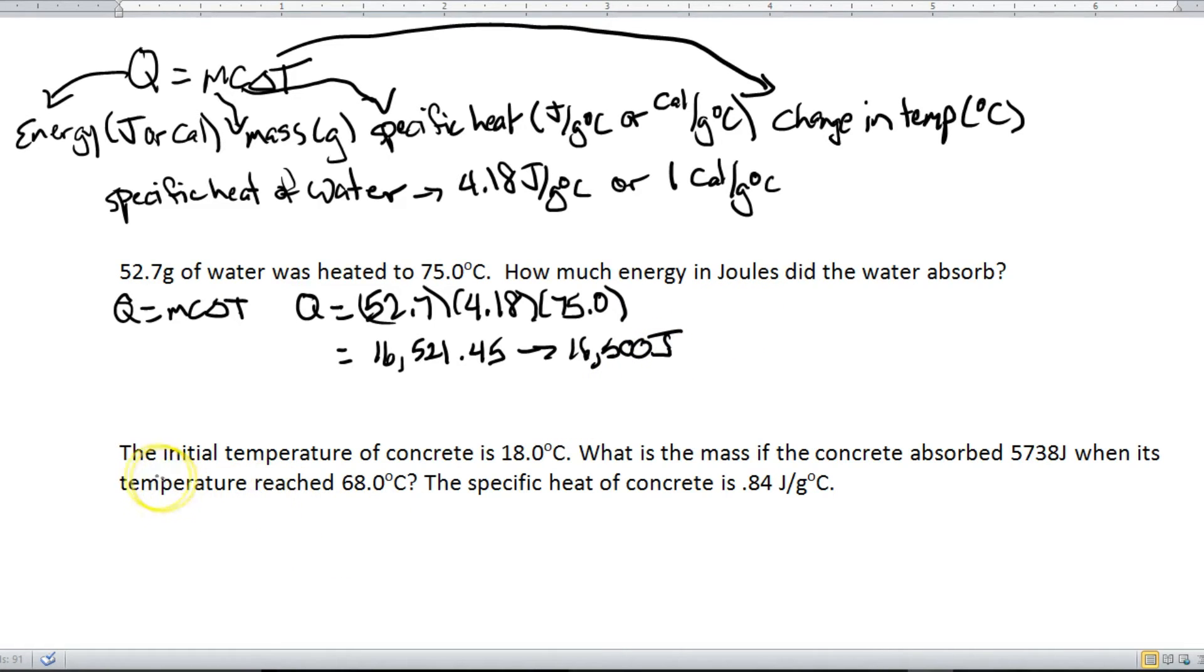Okay, let's look at this next one here. The initial temperature of concrete is 18.0 degrees Celsius. What is the mass if the concrete absorbed 5,738 joules when its temperature reached 68.0 degrees Celsius? Then it tells us that the specific heat of concrete is 0.84 joules per gram degrees Celsius. Alright, so once again, our equation is Q equals MC delta T. Alright, and now we need to plug everything in. Alright, do we know Q? Well, here it is. It's 5,738.